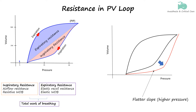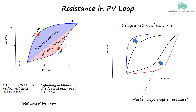Likewise, increased expiratory resistance is evident when the loop demonstrates a delayed return to baseline after expiration, making the expiratory loop wider. This delay suggests that there is higher resistance during exhalation, which may result in air trapping in the lung.